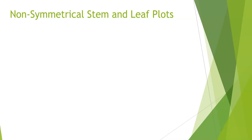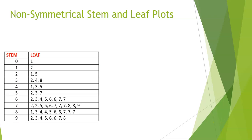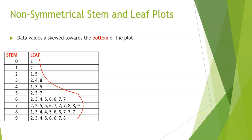Now let's look at some non-symmetrical stem and leaf plots. In this first one, the majority of the data is not in the center — it is situated towards the bottom of the plot, with only some data values up the top. The data values are skewed towards the bottom of the plot. When we talk about a non-symmetrical stem and leaf plot, we use the word 'skewed' and describe which way it is skewed.